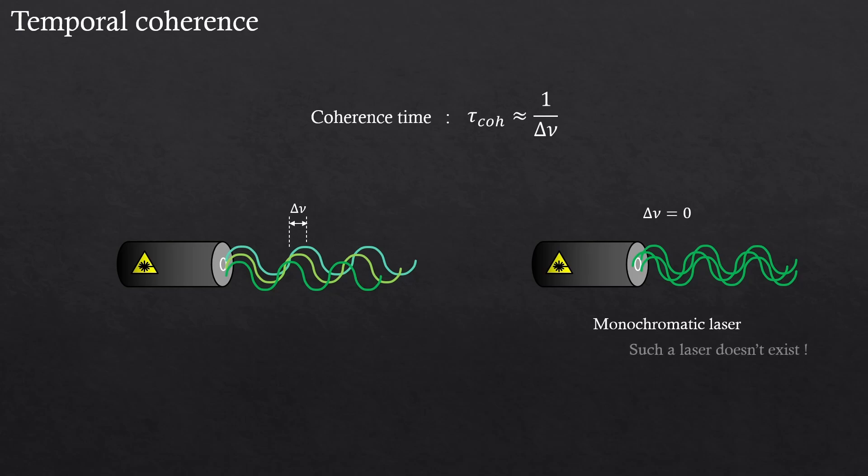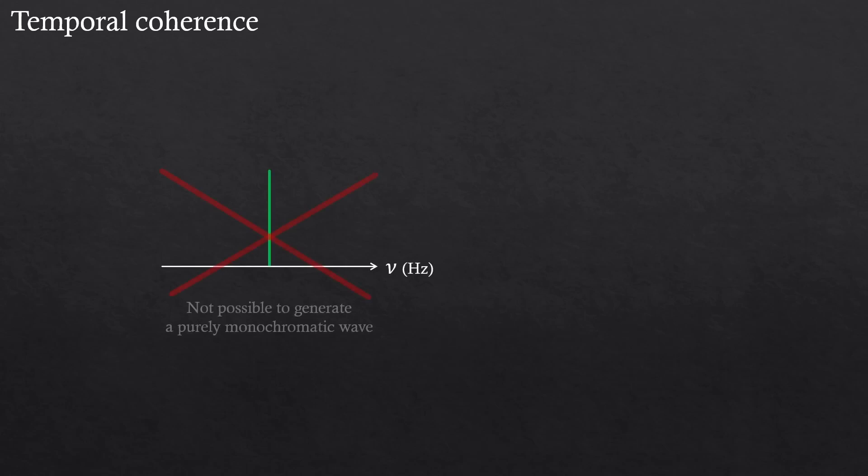You might also ask, what do you mean there is no such a laser? We do have monochromatic lasers, right? No, that is not true. So-called monochromatic lasers that we see in the market are still not purely monochromatic. It's not even possible to have a purely monochromatic wave.